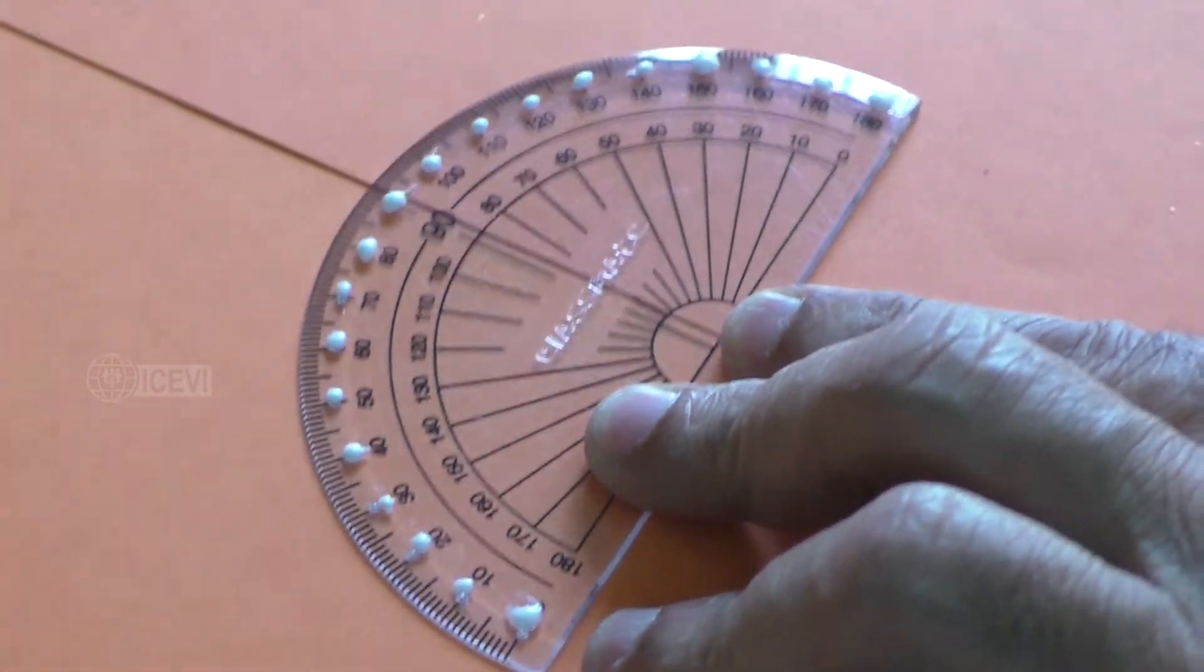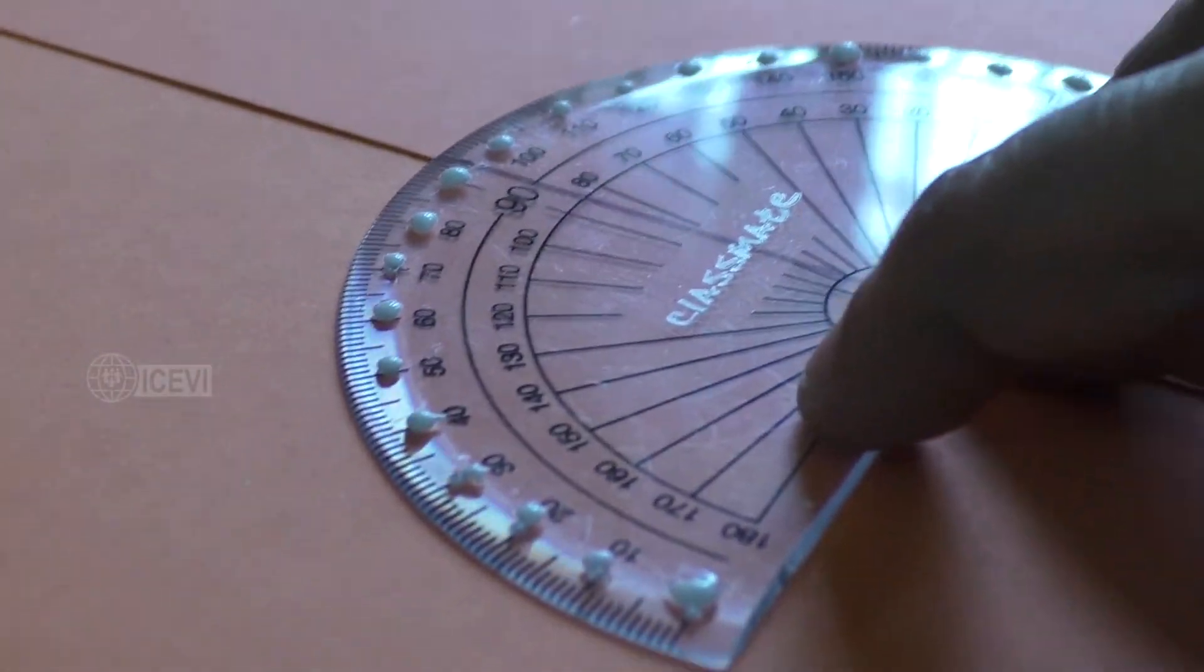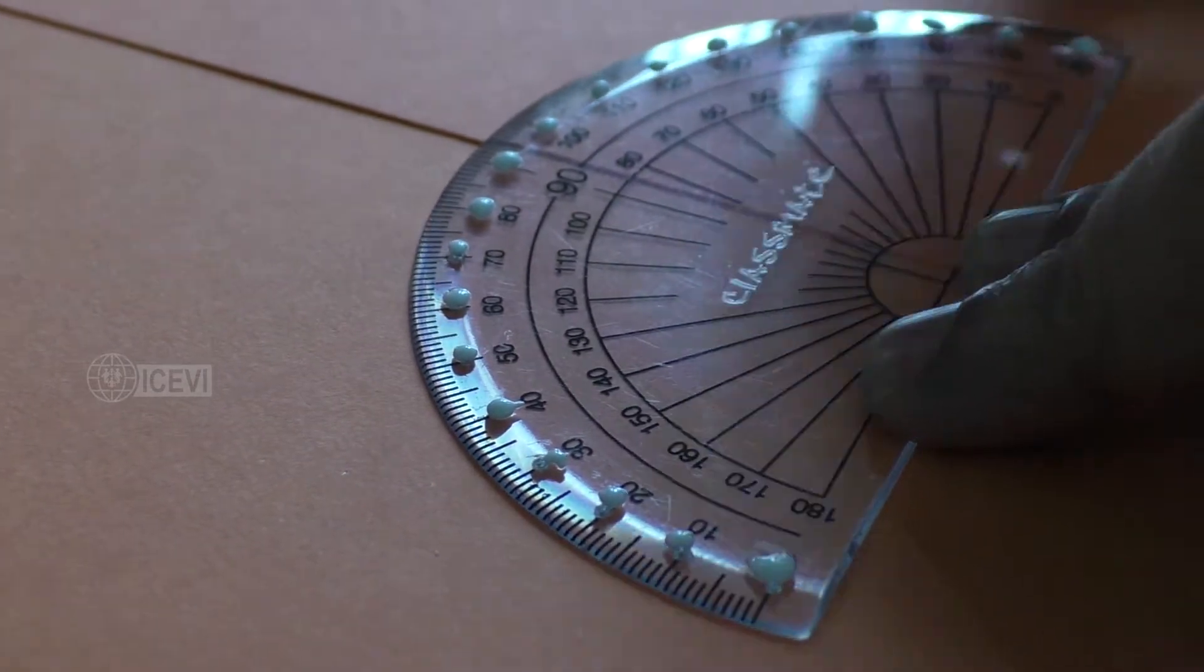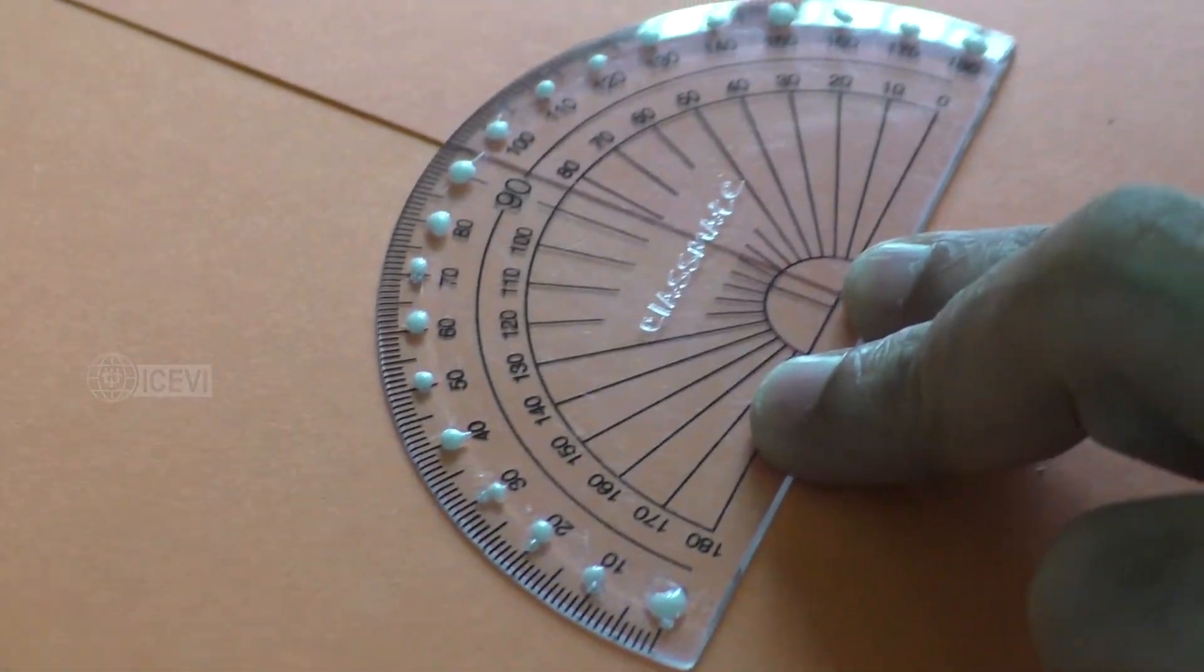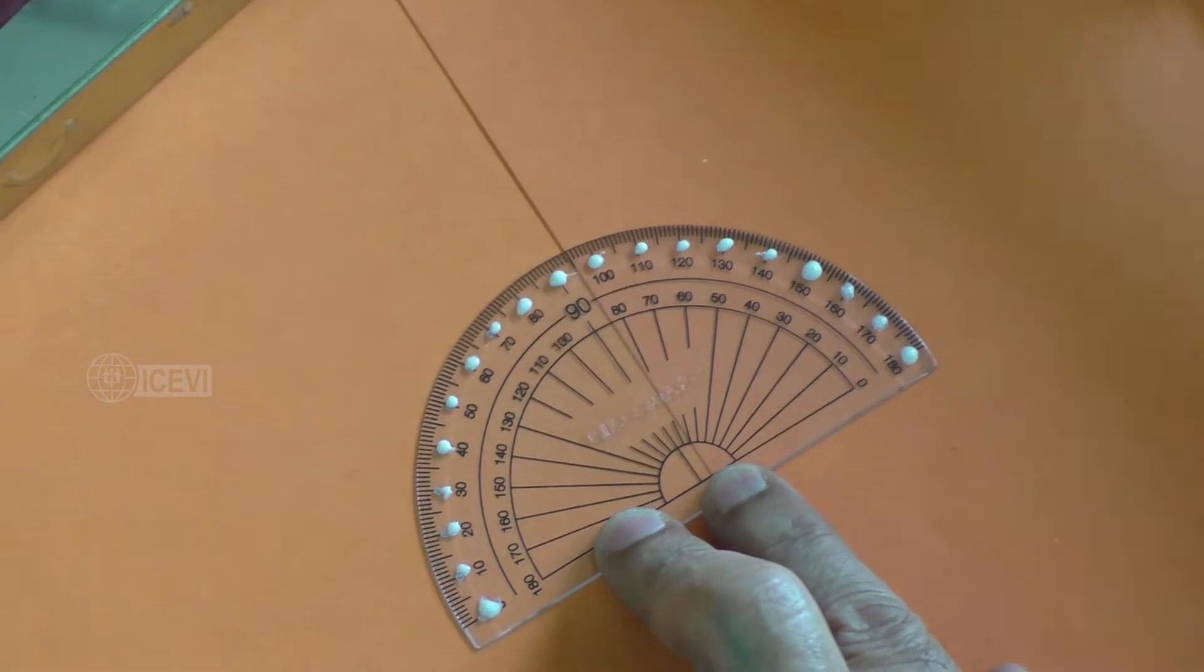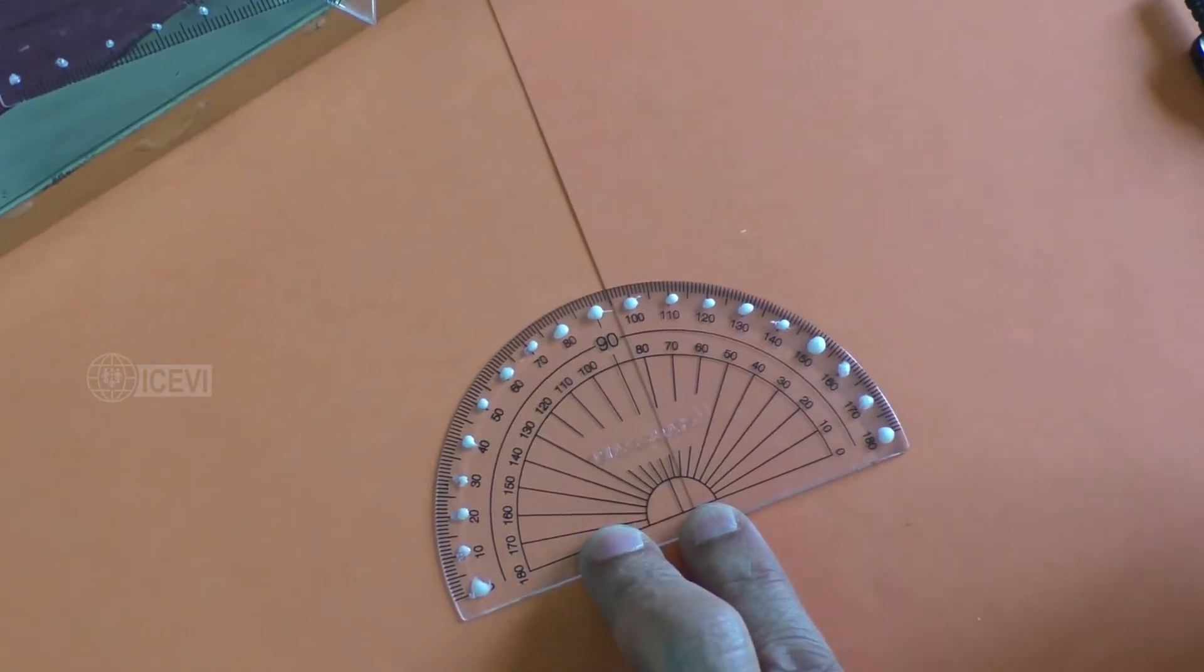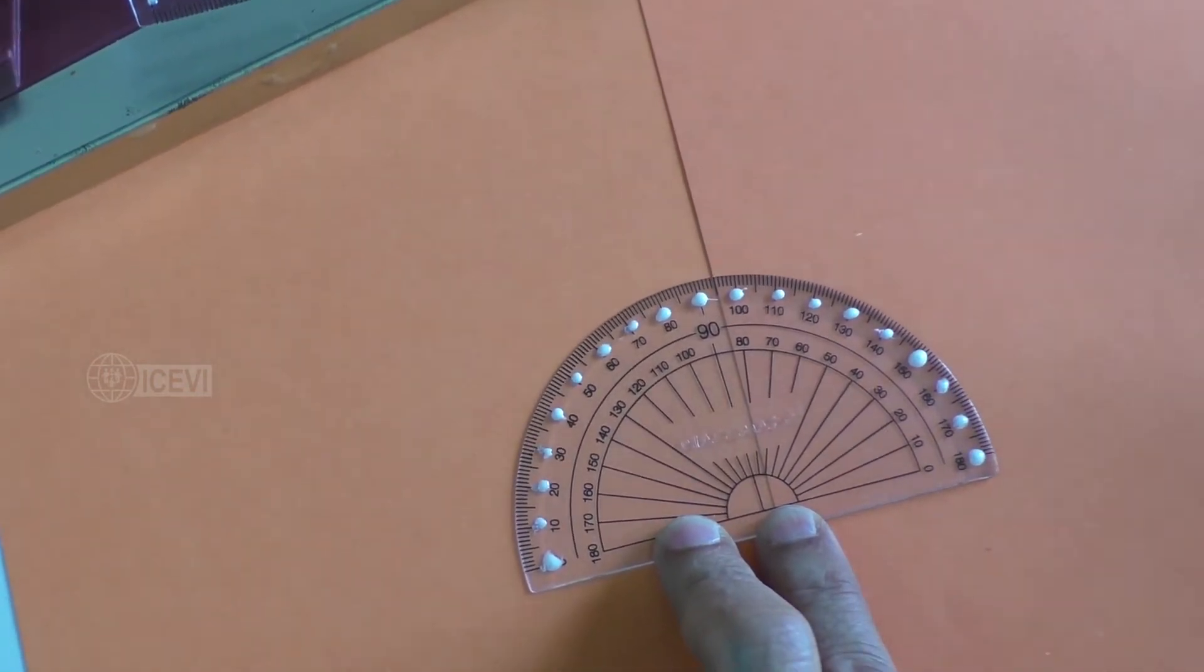This is how regular teaching aids can be adapted for the benefit of visually impaired children. We have not made a separate teaching aid. We have taken a regular teaching aid and made simple adaptations that will be extremely useful for visually impaired children.